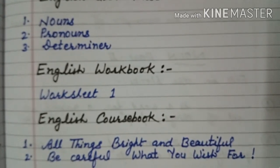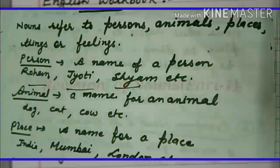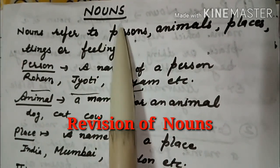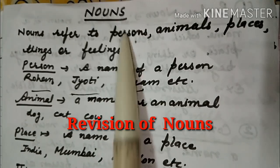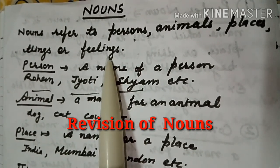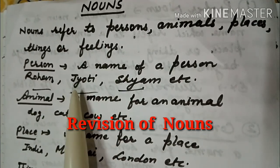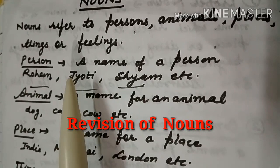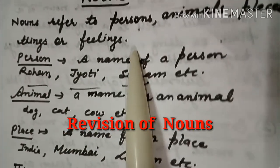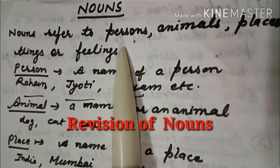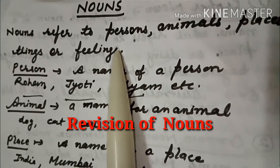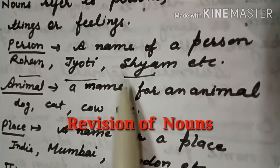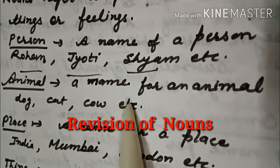I am going to start revision of grammar, and today's topic is nouns. I have already taught you this topic. You now have another chance to listen to each line carefully and remember it. Learn all definitions and note the examples carefully. Ab aapke paas doosra mauka hai — ek baar pehle bhi aapko yeh padha chuki hoon — toh iss baar dhyaan se suniye, definitions learn kariye, aur jo examples bataaye ja rahe hain unhe note kariye.